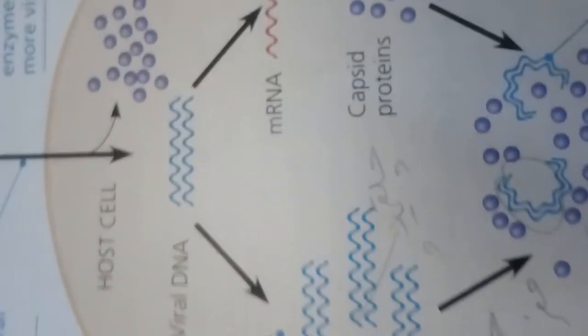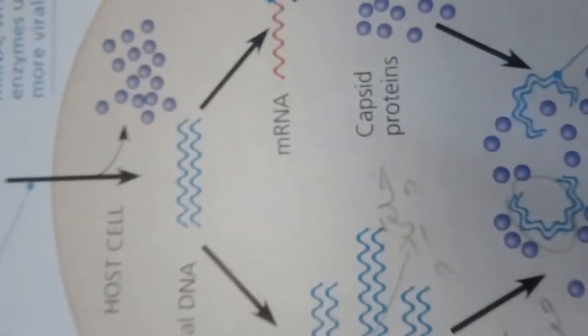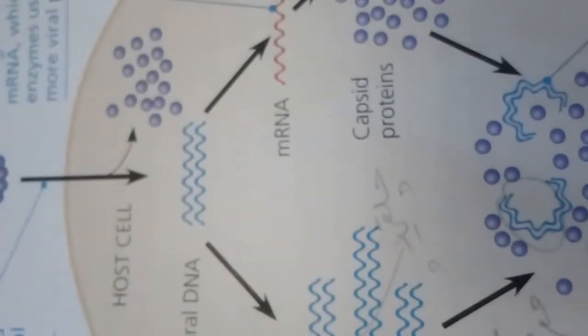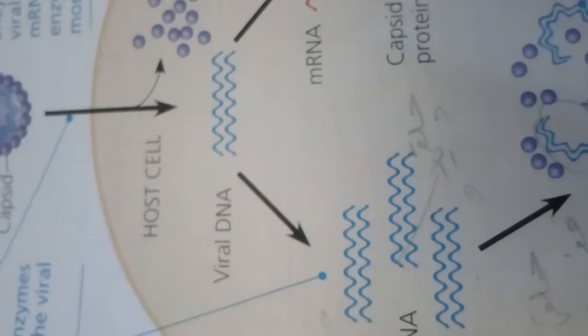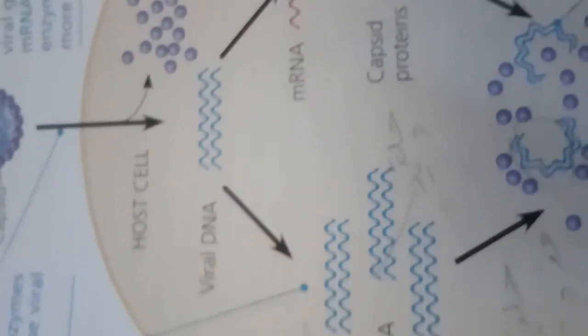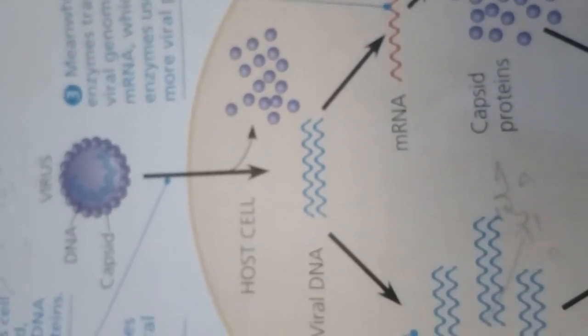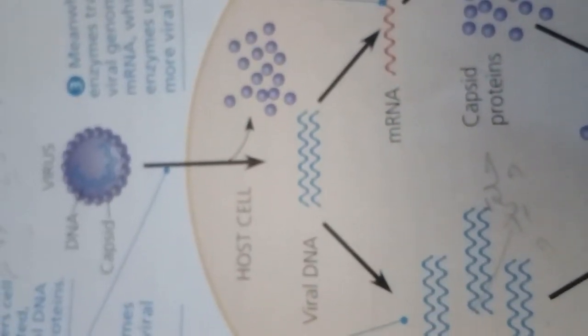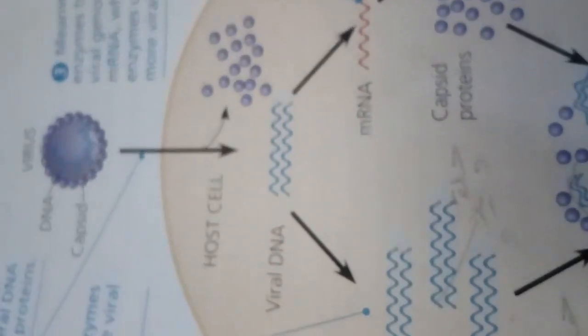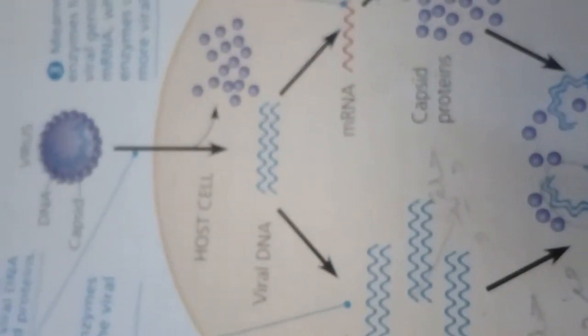After the viral nucleic acid molecules and capsomers are produced, their assembly into new viruses is often a spontaneous process of self-assembly. In fact, the RNA and capsomers of TMV can be separated in the laboratory and then reassembled to form complete viruses by mixing the components together under the right conditions.